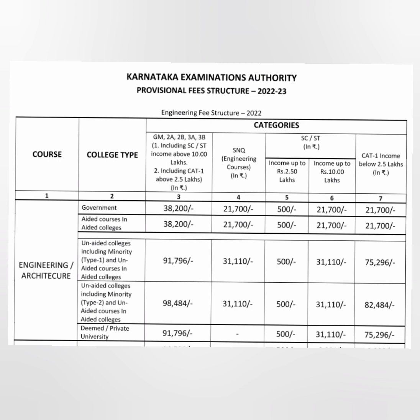There are also different category types. There is a common fee structure for GM, 2A, 2B, 3A, 3B, including SCST whose income is about 10 lakhs, and including Category 1 whose income is more than 2.5 lakhs — all bundled as one category in column 3. Column 4 is the SNQ (supernumerary quota) — a lesser fee based on income. Columns 5 and 6 are for SCST: income up to 2.5 lakhs, and income up to 10 lakhs. The last column is for Category 1 students with income below 2.5 lakhs.